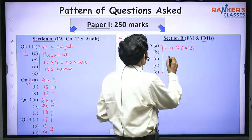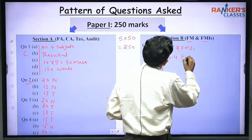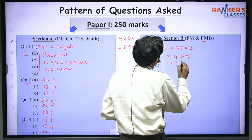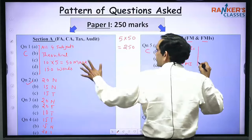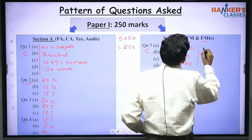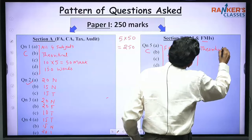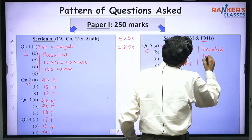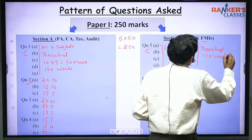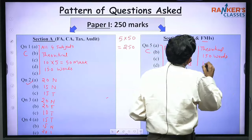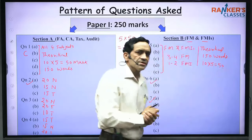In question number 5 (Section B), generally three to four short notes are asked from FM and one to two short notes from Financial Markets and Institutions. Just like Section A, these are also theoretical questions. You have to attempt each short note in around 150 words, and each carries 10 marks — 10 multiplied by 5 equals 50 marks.